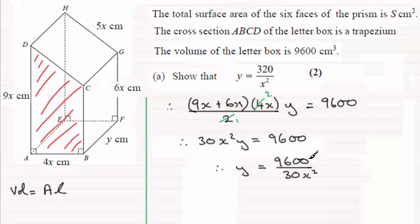Then the 30 divides into the 9600, 320 times, so you end up with 320 then all divided by x squared. And there you go.